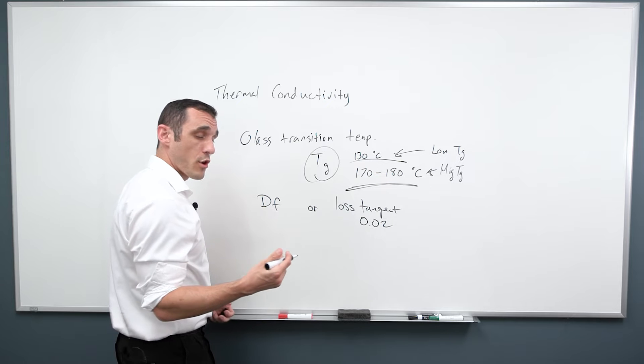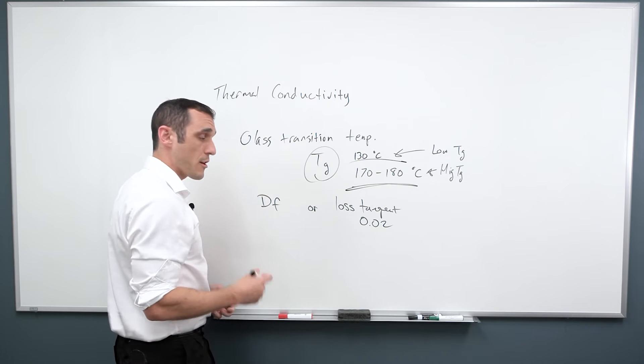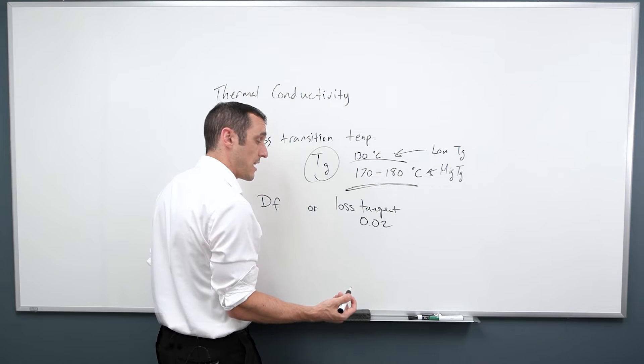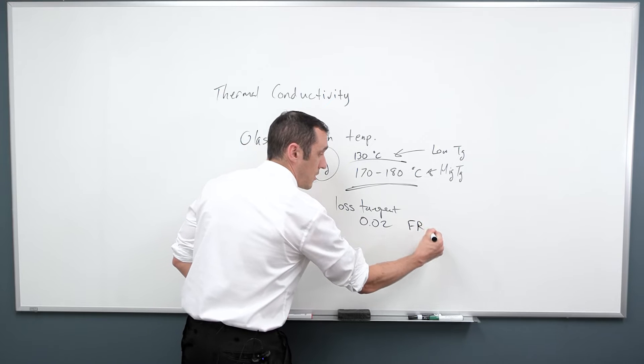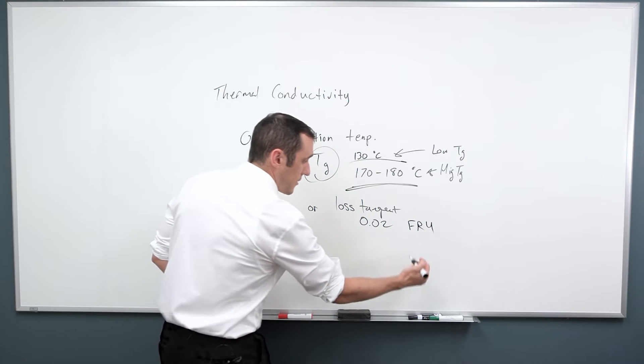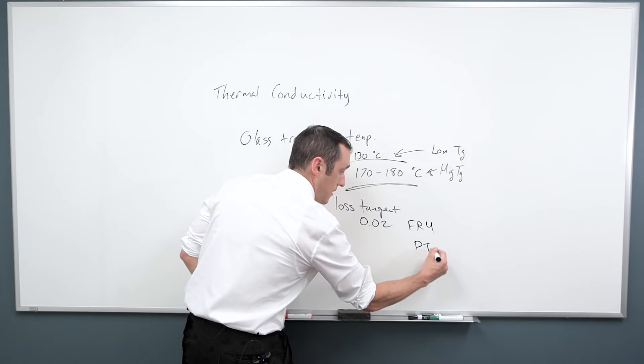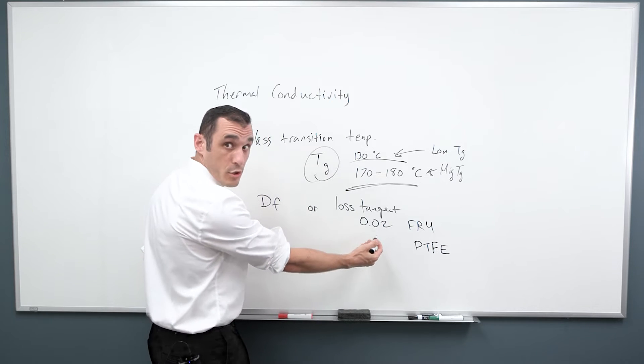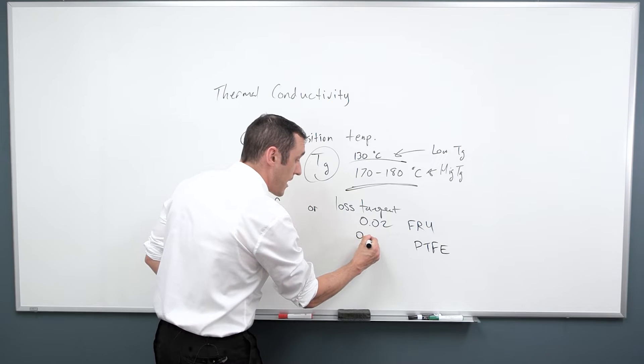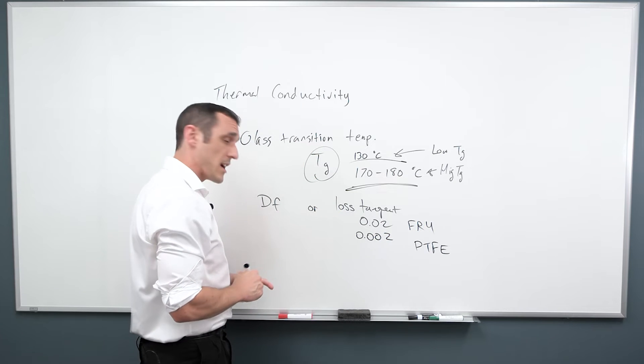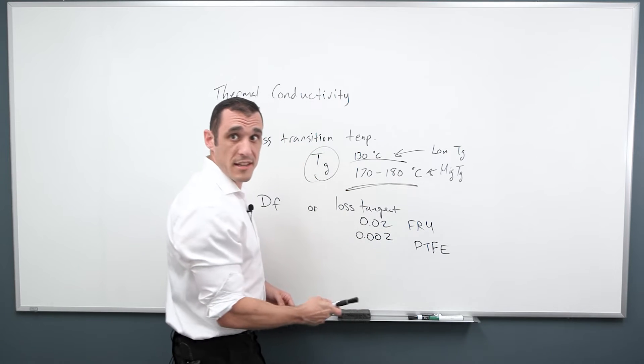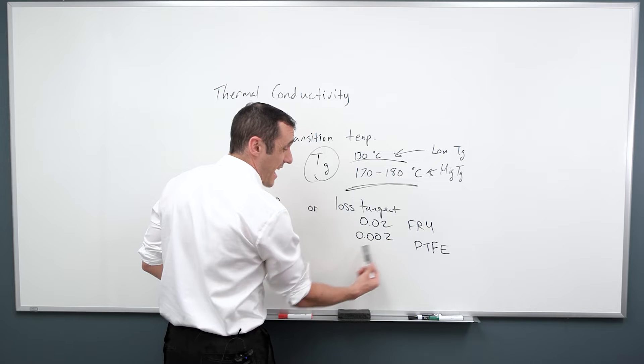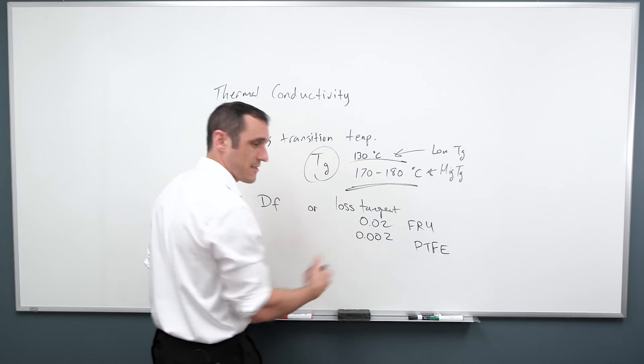If you are working in the high frequency microwave regime, there are alternative materials to just simple FR4 grade laminates. This is a value for a typical FR4 grade laminate, but an alternative laminate system is PTFE based laminates. And PTFE laminates tend to have about an order of magnitude lower or about 0.002 loss tangent. So when we say low loss laminate, you're generally referring to PTFE laminates and they tend to have loss tangent values around this value.